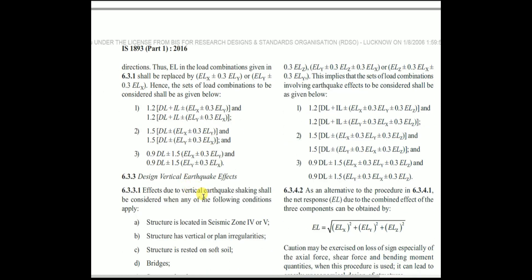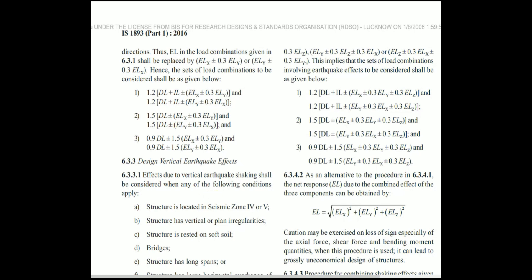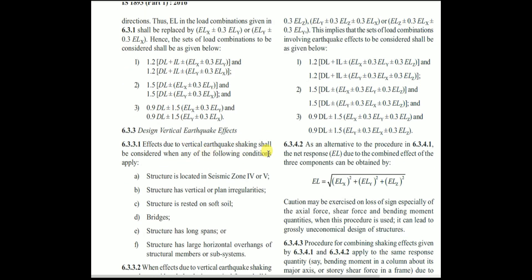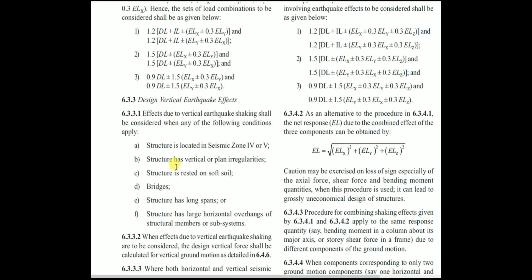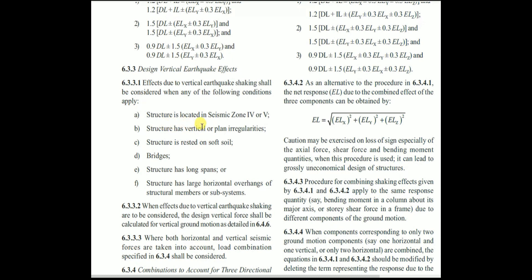Now let's consider all three directions. Load effects due to vertical earthquake shaking shall be considered when any of the following conditions apply: structure is in seismic zone 4 or 5; structure has vertical or plan irregularities; structure rests on soft soil; bridges; structure has long spans; or structure has large horizontal overhangs of structural members or subsystems.